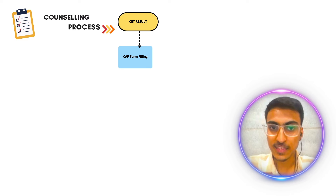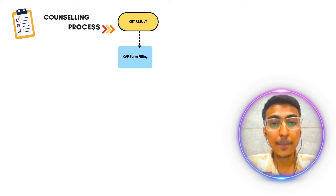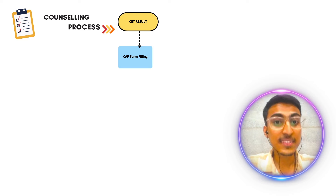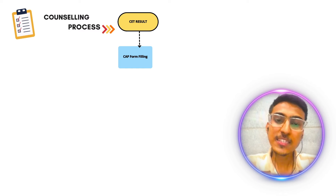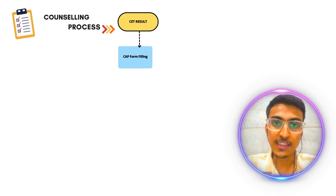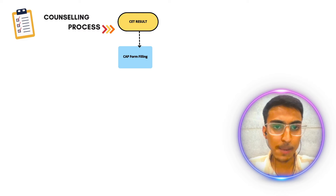CAP round का सबसे पहले form भरना पड़ेगा। Form भरने के लिए आपको documents लगते हैं। Documents के उपर हमने previous video बनाया था — कि कौन-कौन से important documents हैं regarding admission process। SC, ST, OBC, आप जो भी category में आते हो — अगर आप किसी minority में आते हो जैसे Gujarati minority, Sindhi minority, Hindi minority — तो minority के लिए कौन-कौन से documents लगेंगे। अगर आपको 50% scholarship चाहिए for an open category student, तो scholarship के लिए कौन-कौन से documents लगते हैं — सब चीज़ों के ऊपर हमने last video में discuss किया था। CAP round form filling में आपको सारे documents online submit करने पड़ते हैं। यह complete online process है।